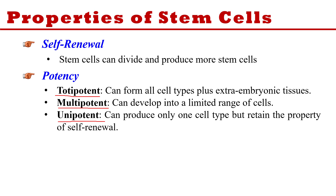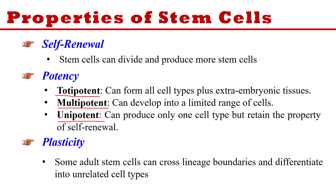The next property is plasticity. This means that adult stem cells can cross lineage boundaries and differentiate into unrelated cell types. It is not hard and fast that one specific stem cell will only change into a specific adult cell — they can sometimes cross these boundaries and differentiate into unrelated cells. This is what is called plasticity.